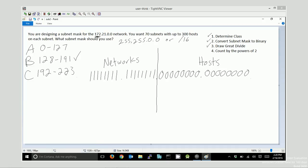And what we're going to try to do is borrow some bits, turn some of these zeros into ones, in order to create 70 subnets and up to 300 hosts on each subnet. There's only one answer that will work.